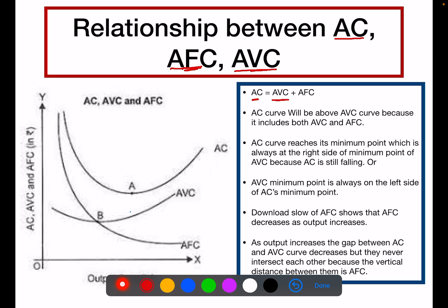The next point is about the gap between the AC and AVC curves. After both curves reach their minimum points and start rising, the gap between them decreases because of the average fixed cost curve. There is a vertical gap between the AC and AVC curves — the gap can be reduced, but they will never intersect each other because of the AFC. That's all for the day, thank you.